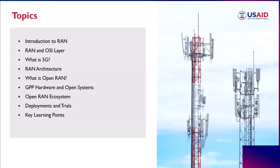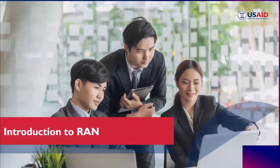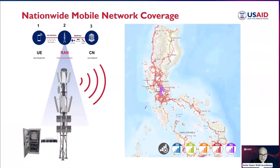Let's start with the introduction to radio access network. What is radio access network, or RAN? Radio access networks are commonly known as cell sites. These are strategically placed to provide wireless coverage to users within a specific geographic area, and you can see them all around you.